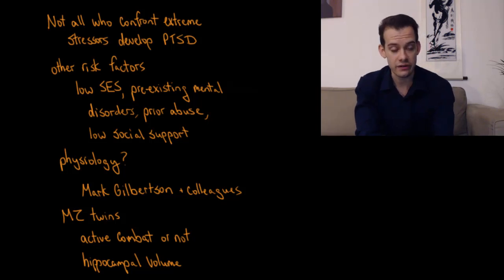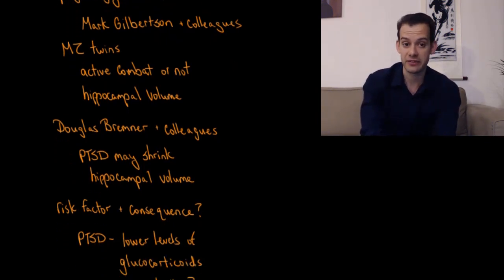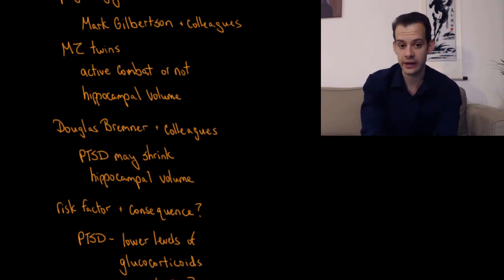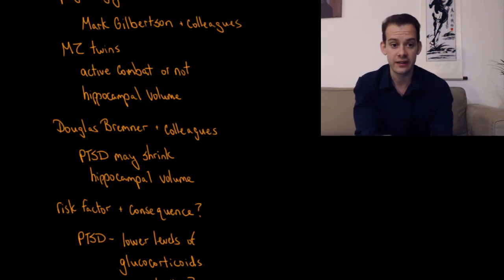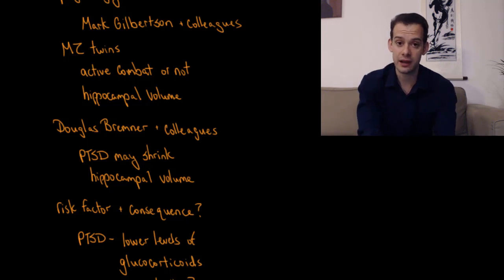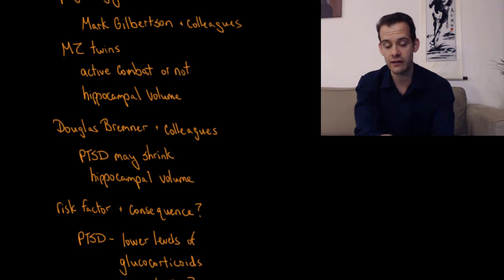There are also physiological risk factors. One identified by Mark Gilbertson and colleagues is the volume of the hippocampus. They looked at sets of monozygotic twins and found that when one twin saw combat and the other didn't, if the combat-exposed twin had smaller hippocampal volume, they were more likely to suffer from PTSD, suggesting smaller hippocampal volume is a risk factor. However, Douglas Bremner and colleagues found that PTSD might also shrink the hippocampus, suggesting it can be both a risk factor and a consequence of suffering from PTSD.